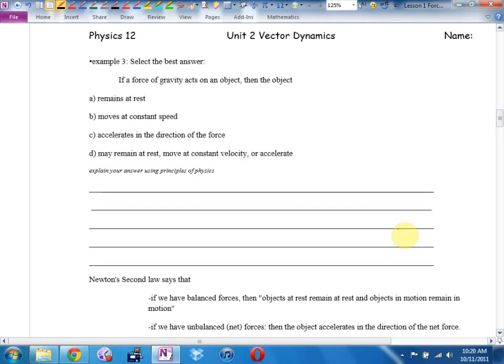Example three says, Here's another one of those using principles of physics to explain questions. If the force of gravity acts on an object, then the object, A, remains at rest. B, moves at a constant speed. C, accelerates in the direction of the force. D, all of the above.